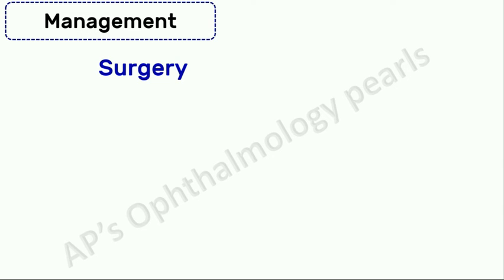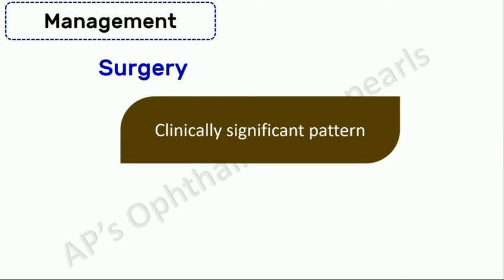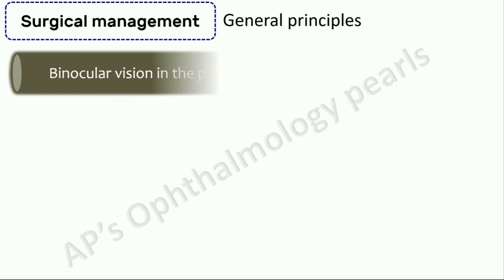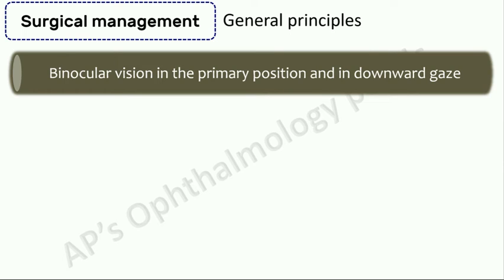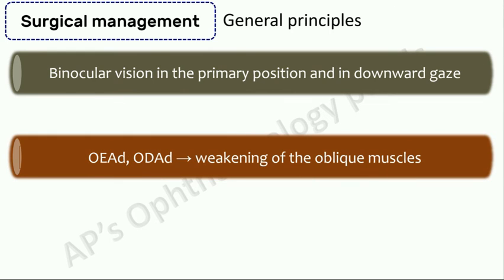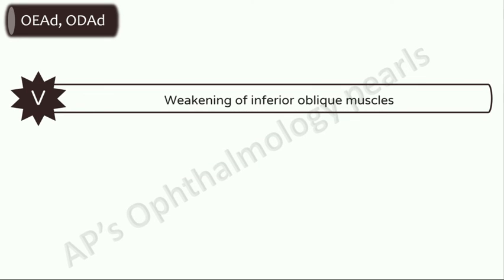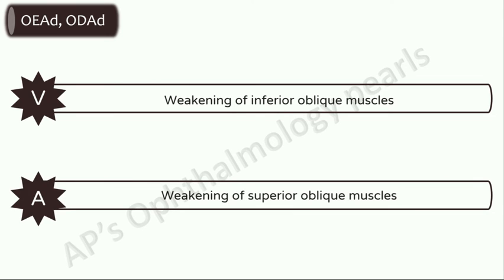Surgical management is recommended when there is a clinically significant pattern and/or any abnormal head position. Binocular vision in the primary position and in downward gaze is much more important than in upward gaze, and surgery should be planned accordingly. Any horizontal deviation should also be addressed during the procedure. For pattern strabismus associated with apparent overaction of the oblique muscles, weakening of the oblique muscles is performed. If there is no oblique overaction, vertical transposition of horizontal muscles should be performed. For overaction of the inferior oblique or over-elevation in adduction, weakening of inferior oblique muscles is performed; for superior oblique overaction or over-depression in adduction, weakening of superior oblique muscles is performed.